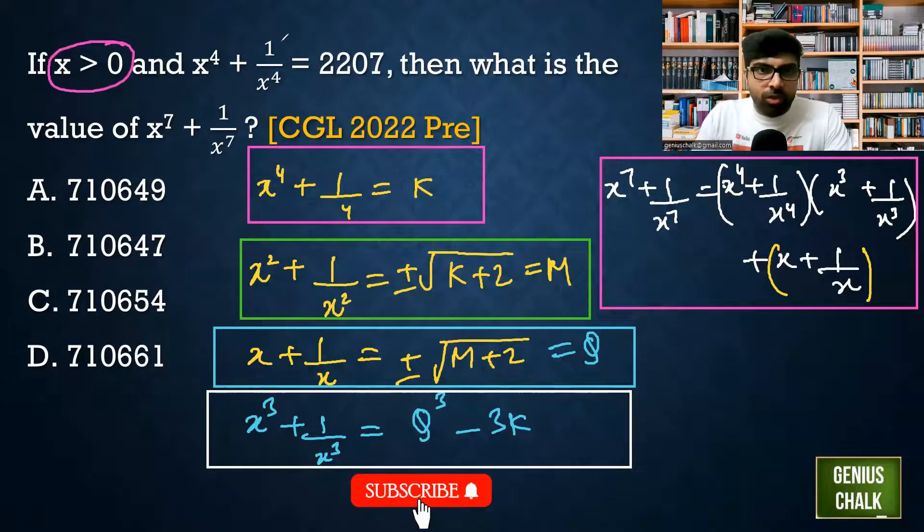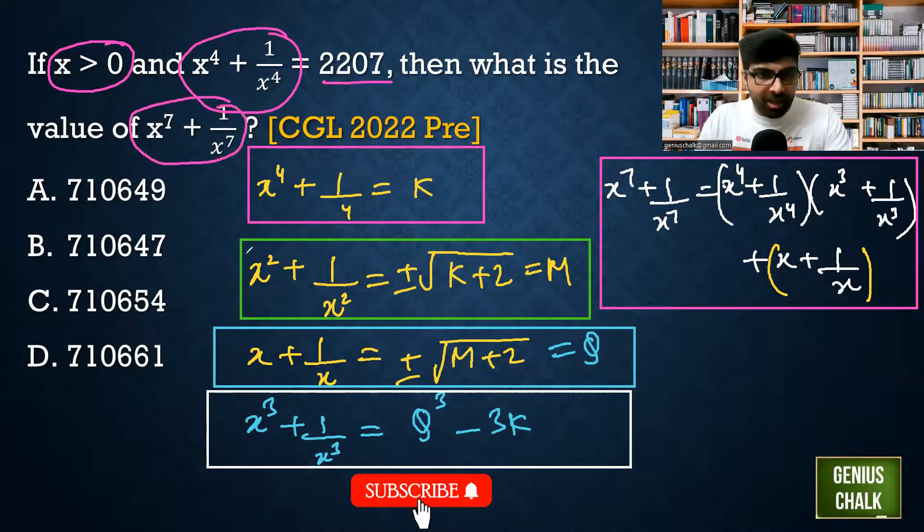If x is greater than 0 and x^4 plus 1 by x^4 is equal to 2207, find the value of x^7 plus 1 by x^7. For this we must know these formulas.